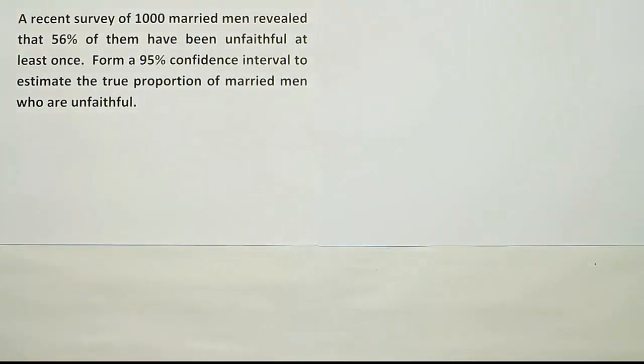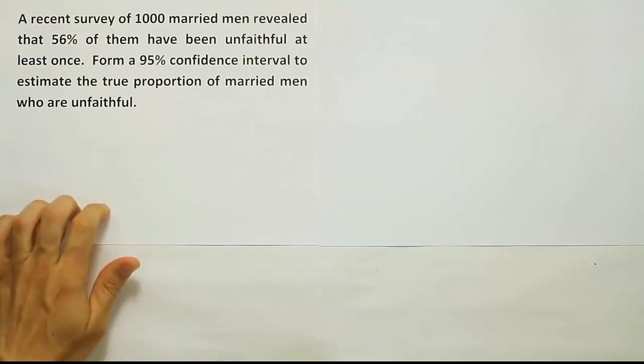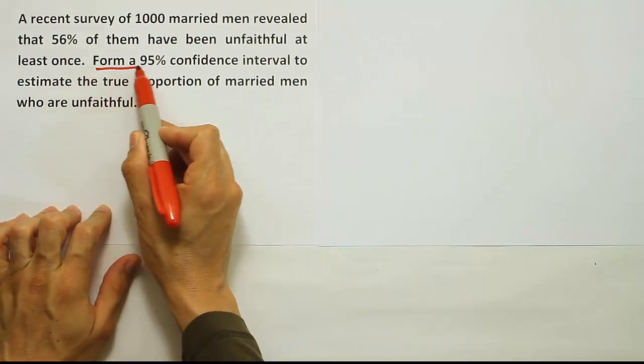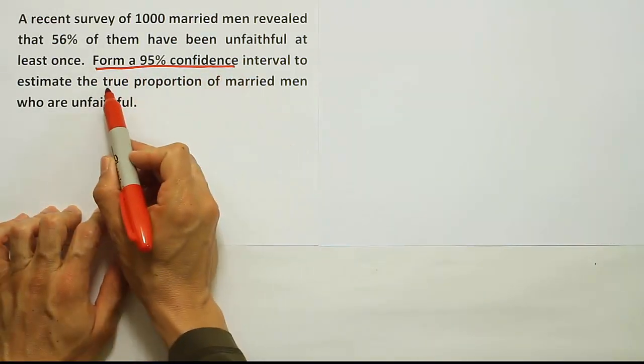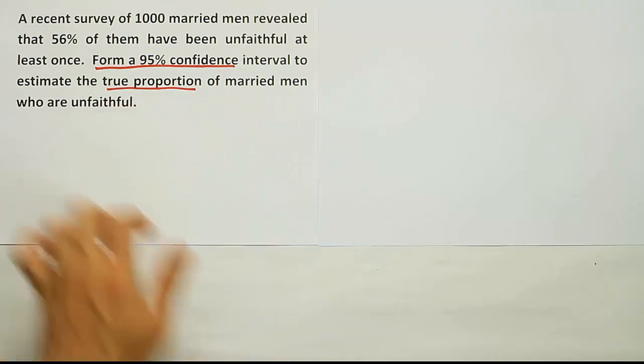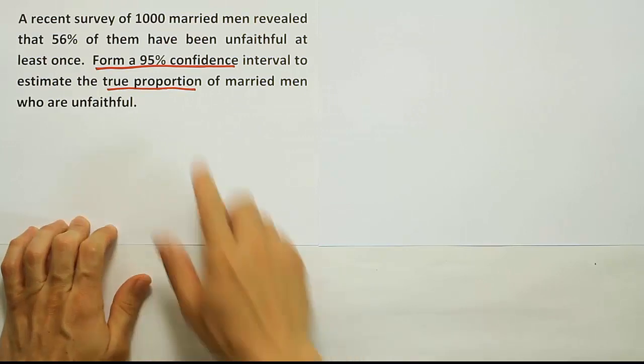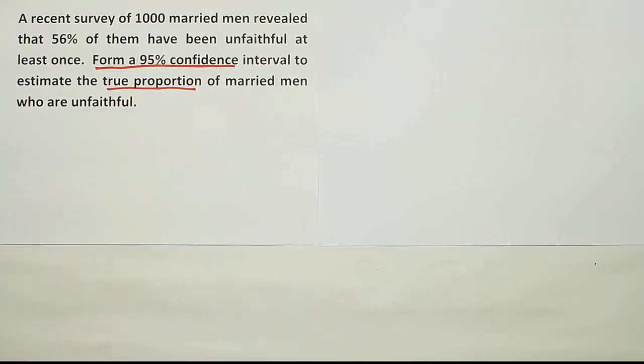In this problem, the first thing I want to do is identify what technique to use. It says form a 95% confidence interval to estimate the true proportion. So it's a confidence interval, but not for the mean—it's for the proportion. We're going to apply a four-step procedure similar to the one we used when working with the mean.